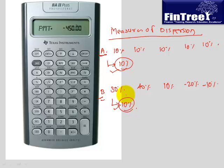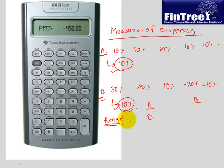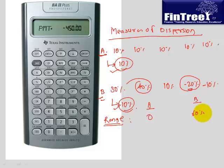And how do you measure that riskiness? In finance, we use measures of dispersion — how dispersed is the data, how widely spread is the data from the mean. The first measure of dispersion is called range, which is simply the difference between the smallest and largest value. In the Stock A case, the range is 0. In Stock B, the smallest number is minus 20 and the largest is 40, so the range is 60.